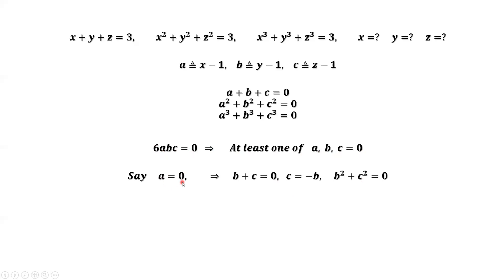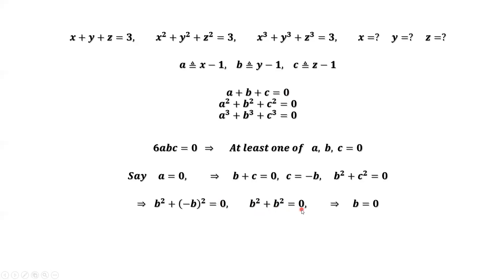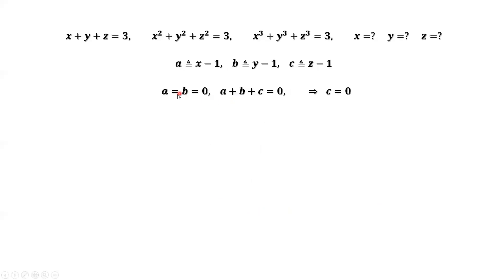Say A equals 0. Since A plus B plus C equals 0, this implies B plus C equals 0, therefore C equals negative B. From the second equation, A equals 0 means B squared plus C squared equals 0. Replacing C by negative B, we have B squared plus (negative B) squared equals 0, so B squared plus B squared equals 0, which implies B equals 0. Now we have A equals B equals 0. Since A plus B plus C equals 0, this implies C equals 0. We have A equals B equals C equals 0.